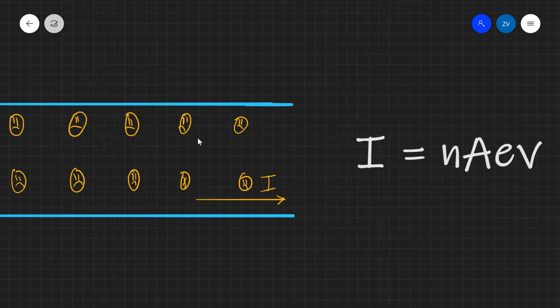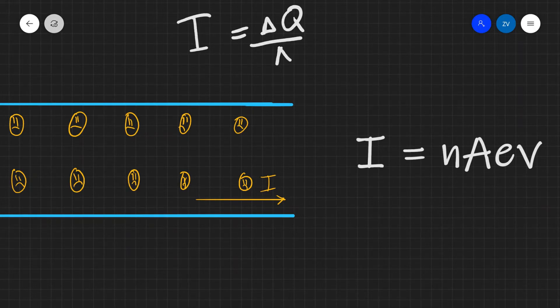So what does the current actually depend on? Well remember the current is actually the rate of flow of charge, delta Q over delta T.